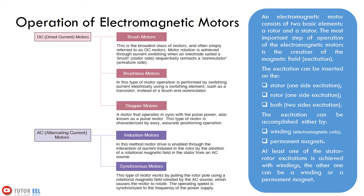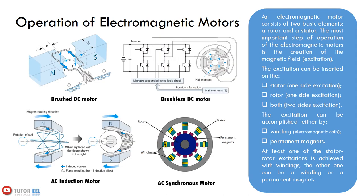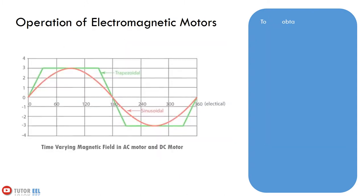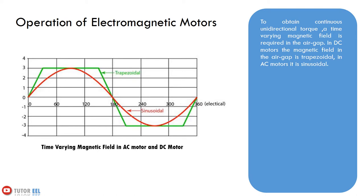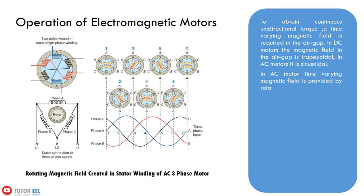The most commonly used DC motors are brushed DC motors and brushless DC motors. AC motors can be single-phased or three-phased; induction motors and synchronous motors are common AC motors. To obtain continuous unidirectional torque, a time-varying magnetic field is required in the air gap. The air gap is the physical gap between the rotor and stator where the magnetic field interacts. In DC motors the magnetic field in the air gap is trapezoidal, while in AC motors it is sinusoidal. In an AC motor, a time-varying magnetic field is provided by rotating magnetic fields generated by the applied alternating current in the stator, which interacts with fields in the rotor creating a torque on the rotor, causing it to rotate.